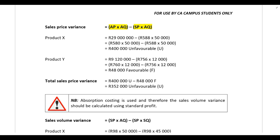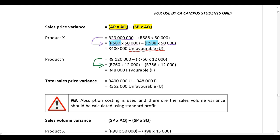For Product X, the total actual price multiplied by actual quantity is 29 million. Since the actual quantity is 50,000 units, the actual price must have been 580 rand per unit. The standard selling price is 588 rand per unit. Because the actual selling price was less than the standard selling price, this variance is unfavorable.